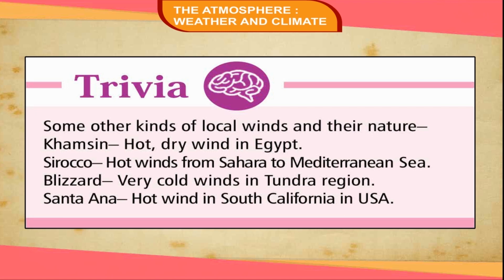Trivia — Some local winds and their nature: Khamsin — hot, dry wind in Egypt; Sirocco — hot winds from the Sahara to the Mediterranean Sea; Blizzard — very cold winds in the Tundra region; Santa Ana — hot wind in South California, USA.